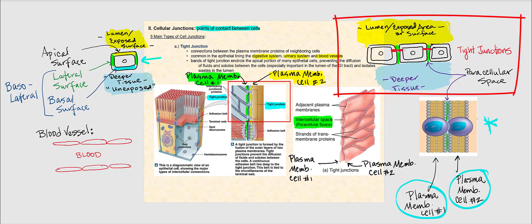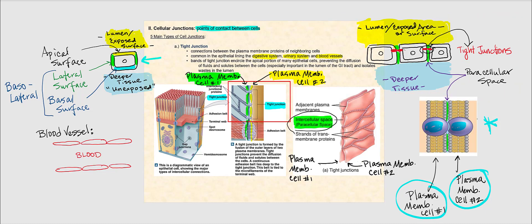Looking at an illustration of three cells, we focus on the apical surface side because that's where we find tight junctions. I'll circle the tight junctions in red with arrows. The space between these cells is called the intercellular space, or paracellular space. Tight junctions are there to prevent substances and fluids from diffusing between the cells through those spaces.